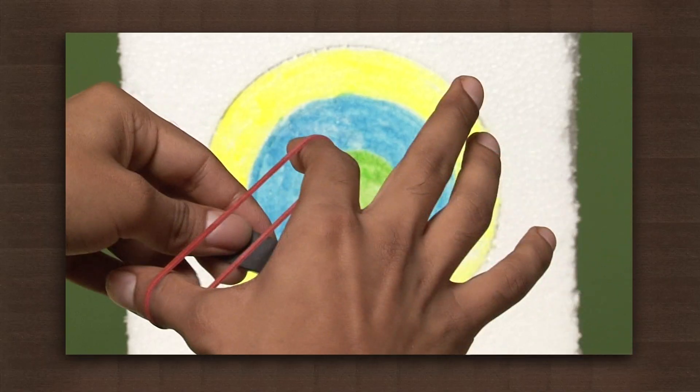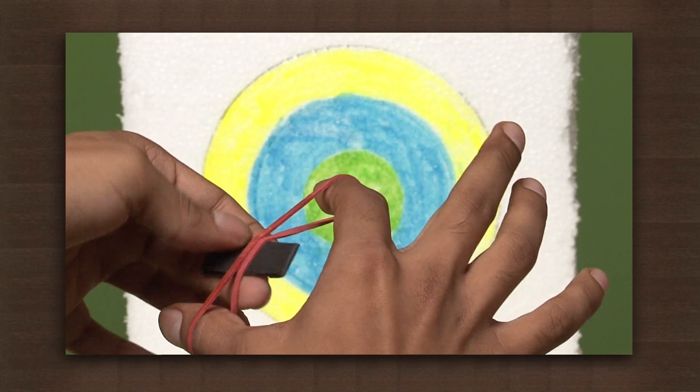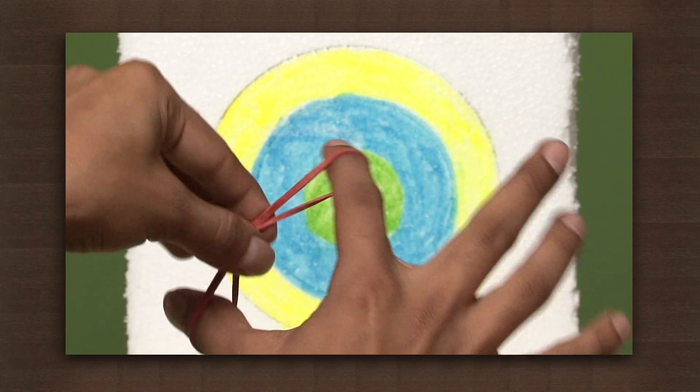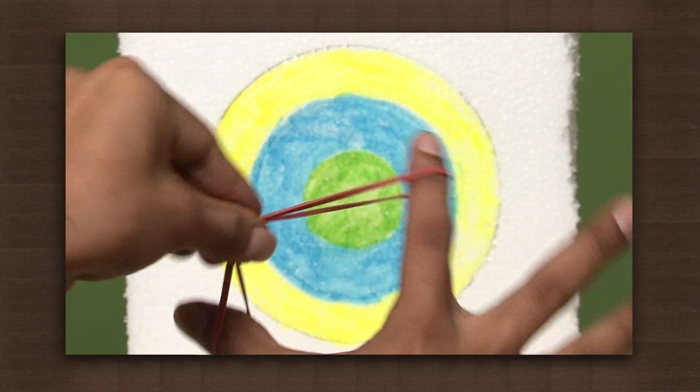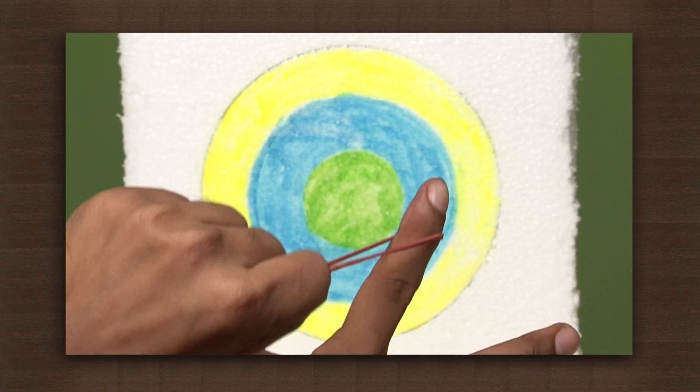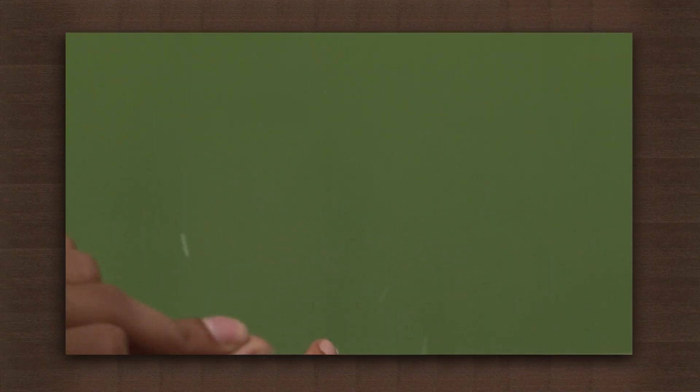Now release the band and the paper. The paper flies across and hits the target. As we stretch, we are performing work on it that gets stored in the rubber band as potential energy. As soon as we release the band, it tries to lose the potential energy and returns to its initial position. The rubber band converts the potential energy to kinetic energy, which sets the paper in motion.